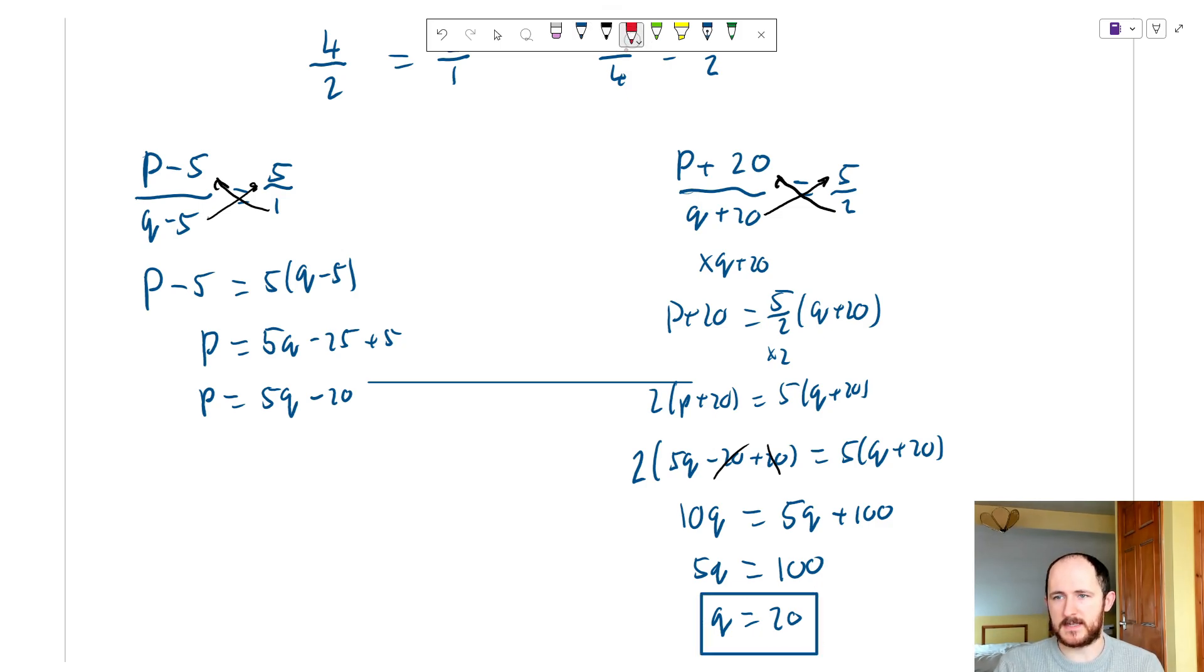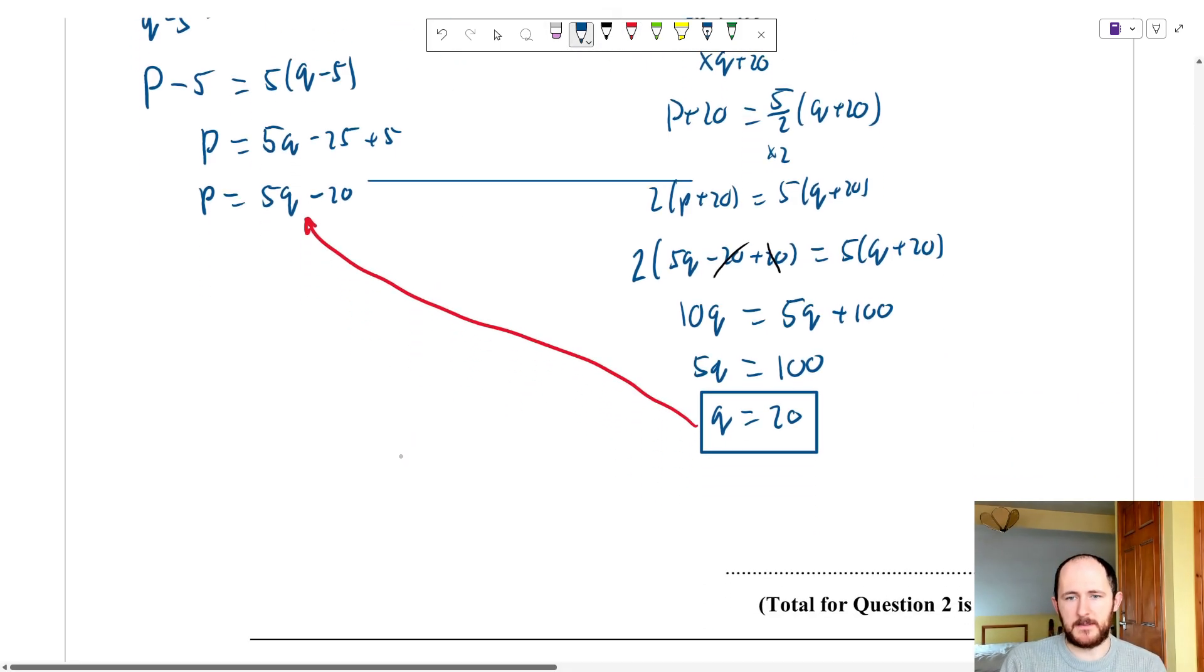And then all I need to do is sub this back into this equation over here to get your other solution. So we get p is equal to 5 times 20 minus 20. So p is equal to 100 minus 20, which is 80.